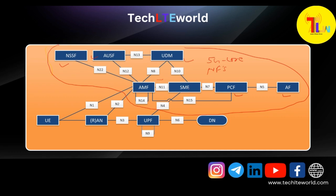You can see that AMF has direct connectivity with the RAN through the N2 interface, and AMF also has direct connectivity with the UE through the N1 interface. Unlike in 4G, in 5G we have a direct connectivity of the UE with AMF through the N1 interface. AMF has maximum similar functionality to what was present in the MME in 4G, but in 5G it is called AMF.